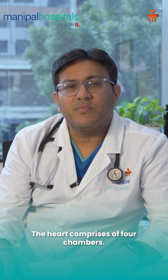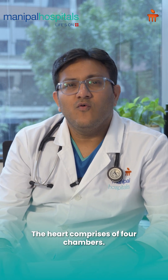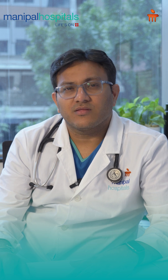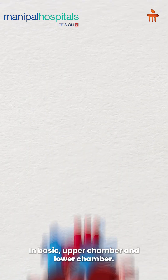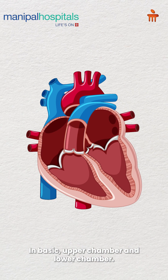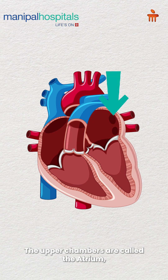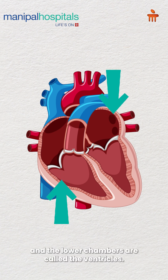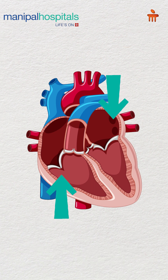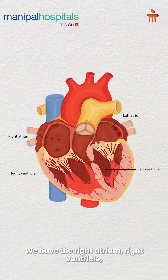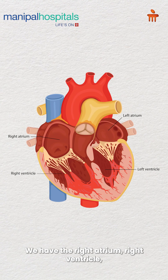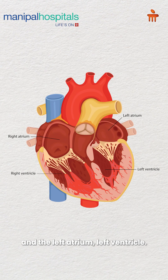The heart comprises four chambers — basically an upper chamber and a lower chamber. The upper chambers are called the atrium and the lower chambers are called the ventricles. We have the right atrium, right ventricle, left atrium, and left ventricle.